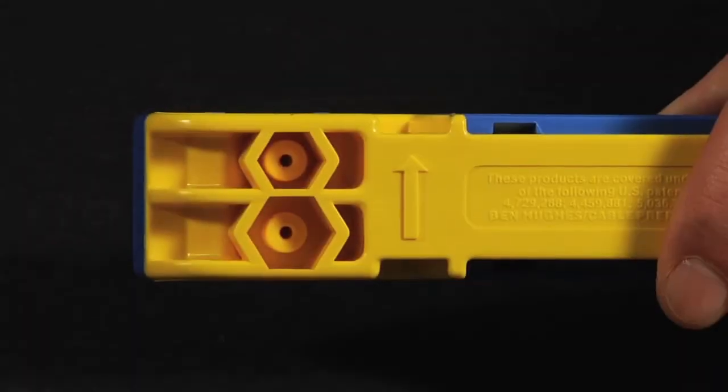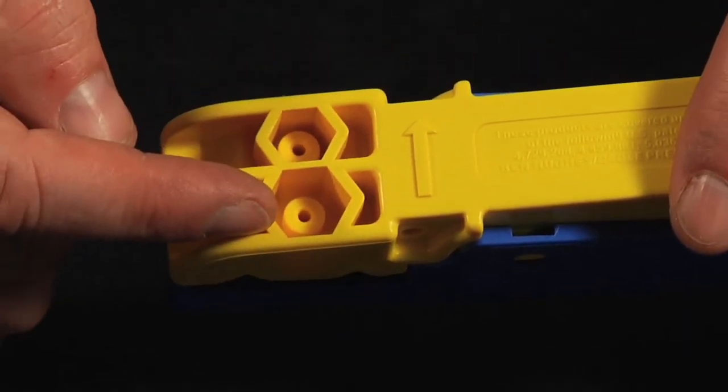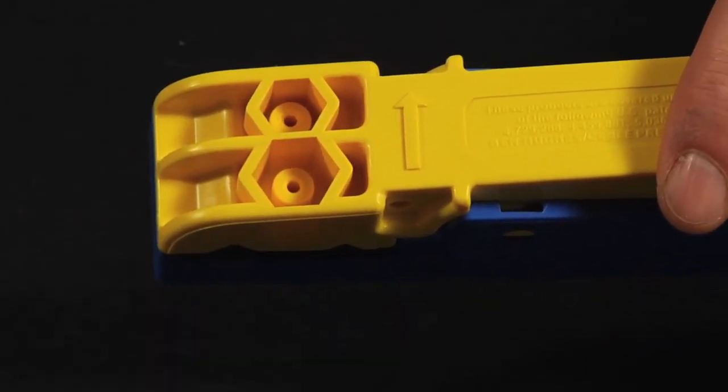On the underside of the CPT is a convenient connector insertion tool for RG6, 59, 7, and 11 connectors.